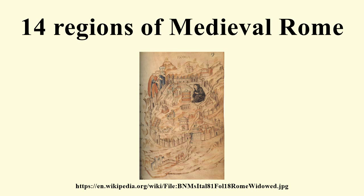XIII. Trastevere. Originally a separate region in 1143 from the Tiber Island, these two regions were combined in the 13th century, bringing the total number of regions down to 13. XIV. Insula Tiberina. After its amalgamation with the region of Trastevere, Rome did not get a 14th region until 1586, when Sixtus V added the old Leonine city, considered until then outside the city, as a new administrative division under the name of Borgo.